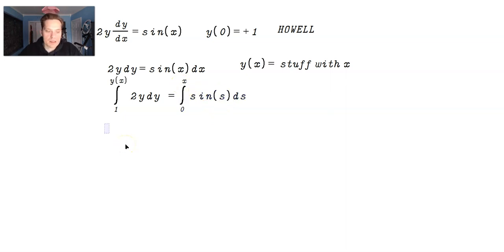Now look what happens on the left side. You're going to have y^2 integrated between y(x) and 1. And on the right side, you're going to have -cos(s) integrated between x and 0.